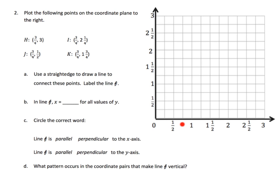Three-quarters is right here between one-half and one whole. So H at (¾, 3) is right up here — there it is. Then I is at (¾, 2¼): still three-quarters on the x-coordinate, and two and a quarter on the y-coordinate. Two and a quarter is right here, and three-quarters right here on the x, so the point goes right there and we label that I.